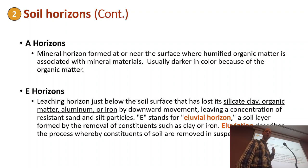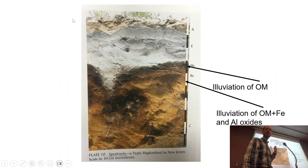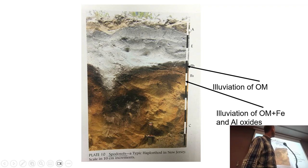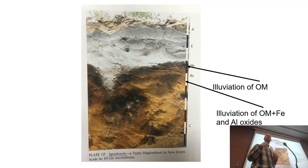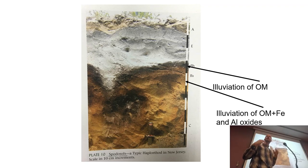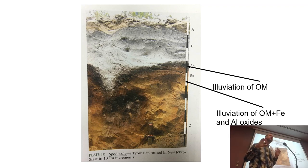The A horizon always becomes dark. As the organic matter decomposes, it releases organic acids — humic acids. Those humic acids dissolve iron and silica, enabling them to move through the soil profile. The dissolution horizon where you lose iron, silica, and clays is the E horizon.